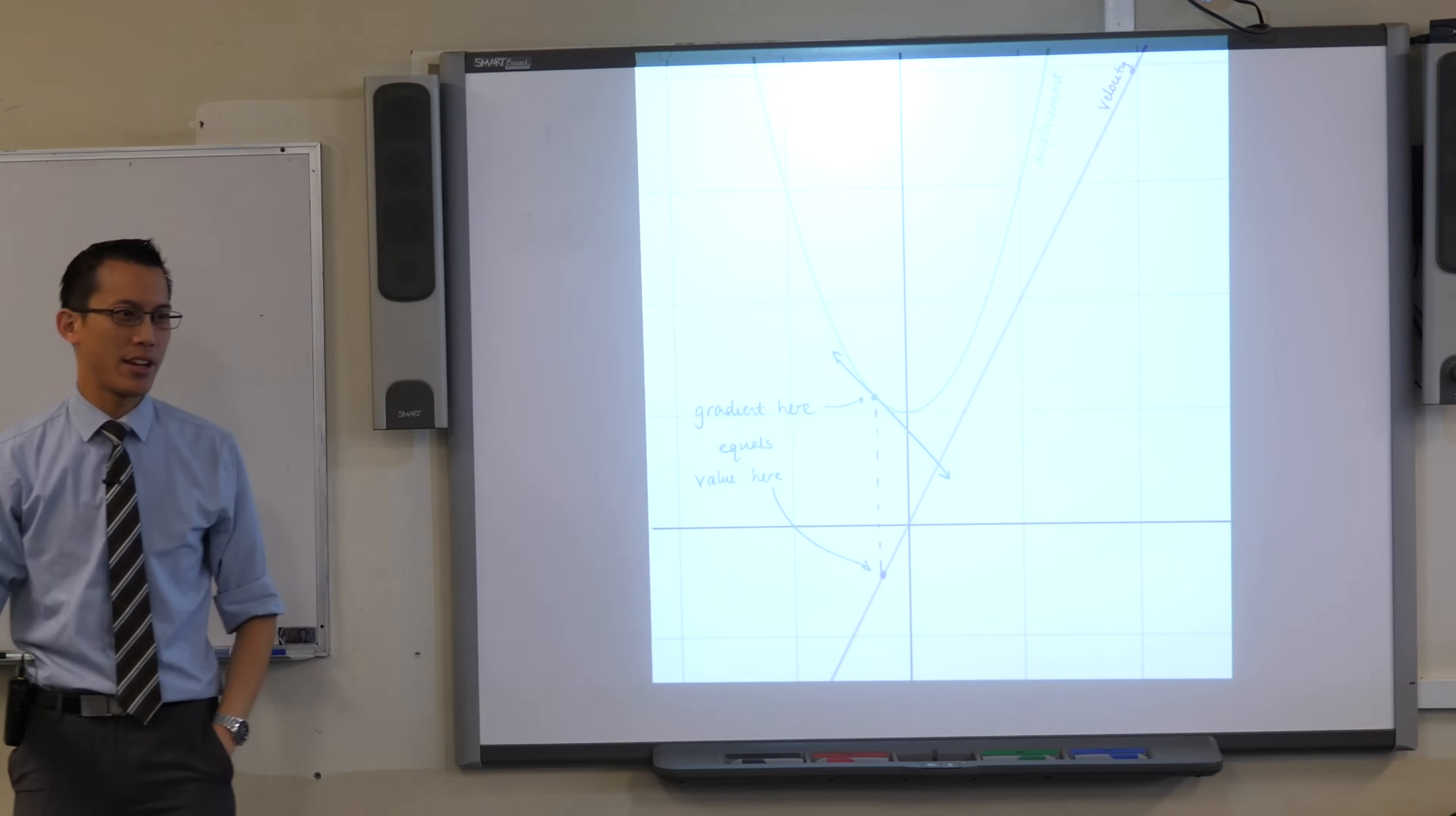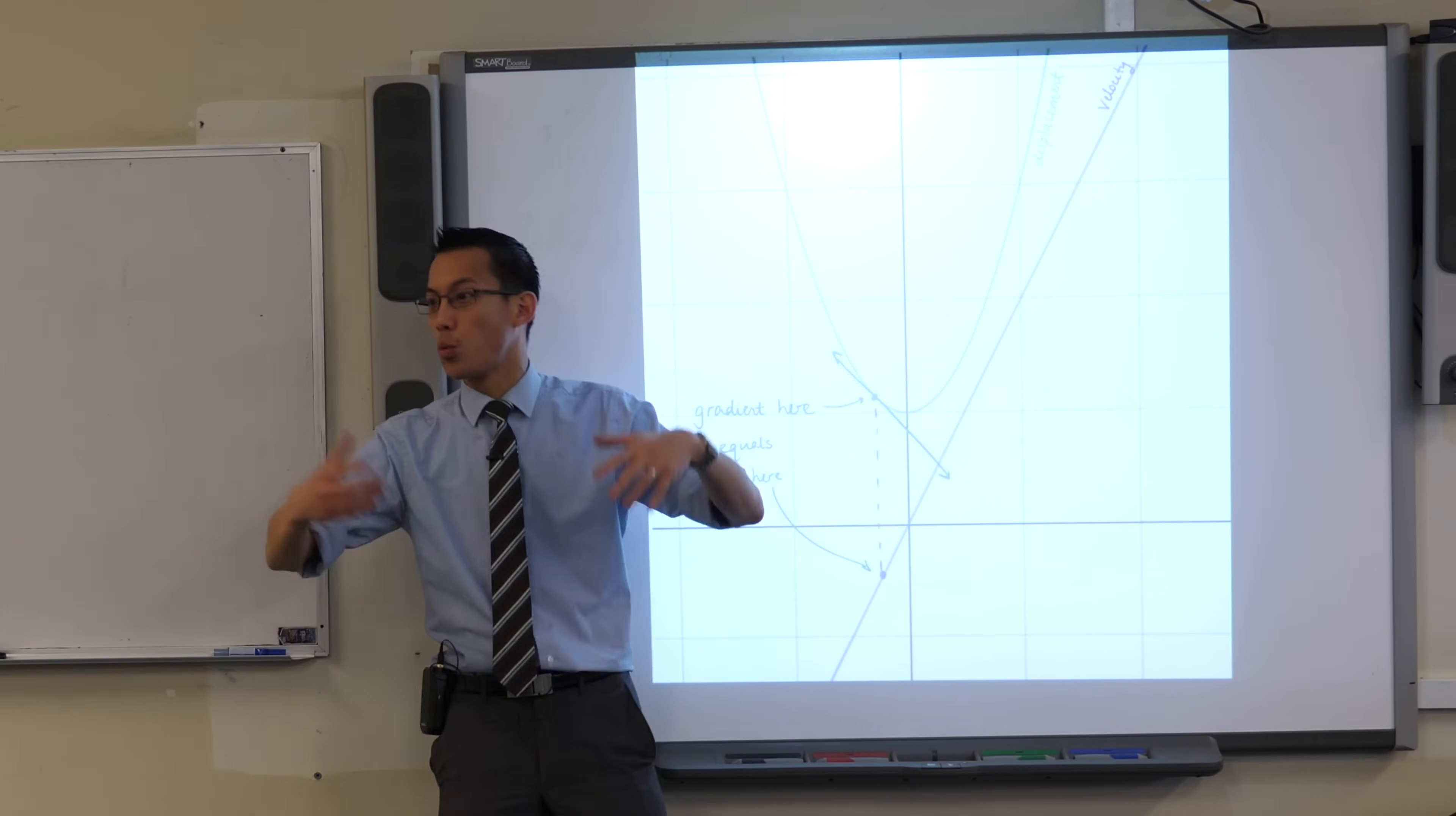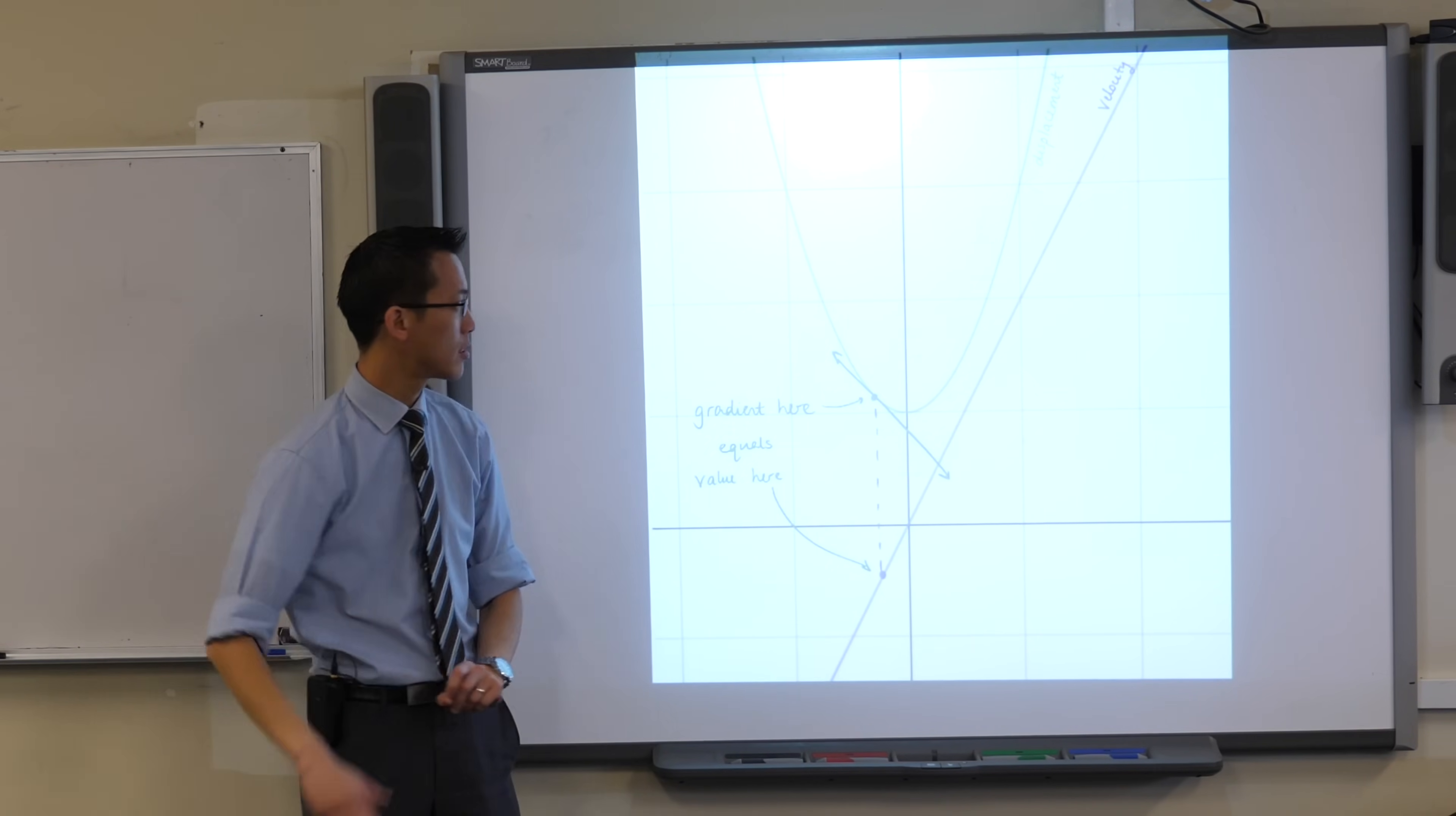We're talking today about integrating with respect to time and I want you to call your mind back to when we first, a couple of lessons ago, introduced this topic and we said if you have not just an x-y graph but a displacement time graph, so your vertical axis is now x and it's your position relative to some fixed point and then your horizontal axis is your t, your time axis, right?